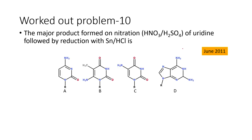In the next one, the major product formed on nitration of uridine followed by reduction with tin and HCl. We are given four different products and have to find out what product will be formed when uridine undergoes nitration followed by reduction. Nitration followed by reduction is nothing but formation of the amino group derivative. Product A and B have the amino unit, C has the amino unit, and D has multiple amino units. D may not be the right product because we are simply doing nitration and reduction — introduction of NO2 group and reduction only.